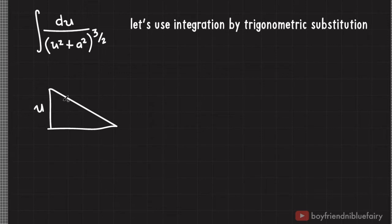Here, let's assume that u is on the vertical axis and the constant a is on the horizontal side of the triangle. Apparently, the hypotenuse is equal to the square root of u squared plus a squared as dictated by the Pythagorean theorem.